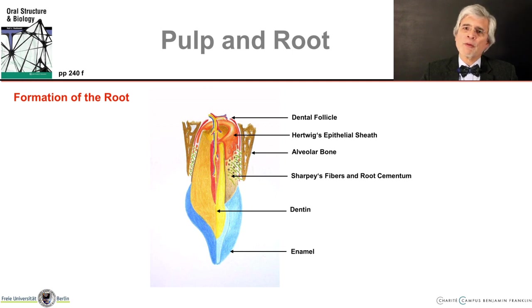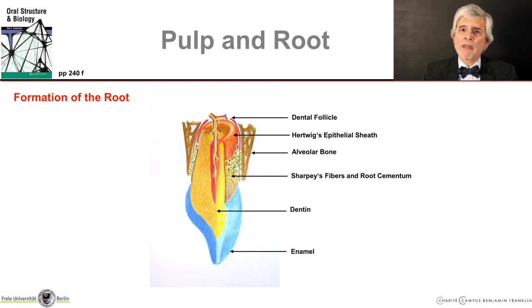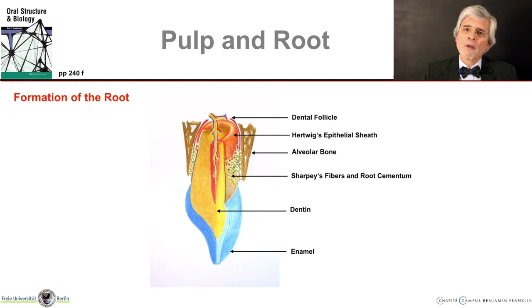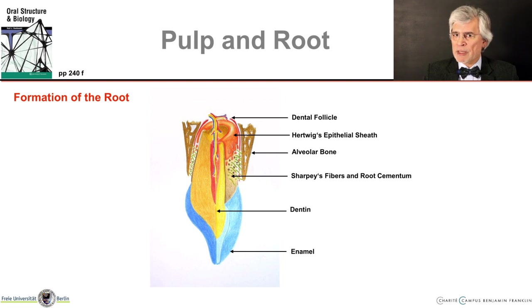Let us first talk about the development of the root — this will make a large part of the anatomy easier to understand. The pulp develops from the dental papilla and is therefore of ectomesenchymal origin. At the time when the first formation of the hard substance begins in the bell stage of tooth formation, a structural pattern of the connective tissue in the dental papilla can already be recognized. The peripheral cells of the dental papilla differentiate into odontoblasts, which form dentine, and blood vessels and nerves are also already clearly visible.